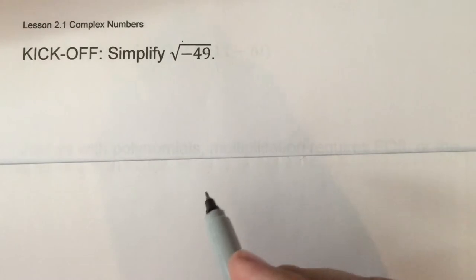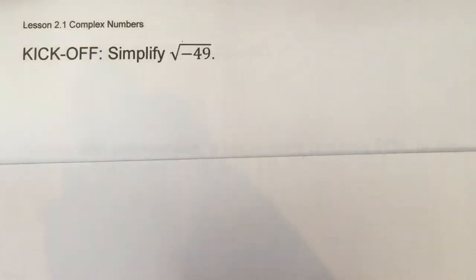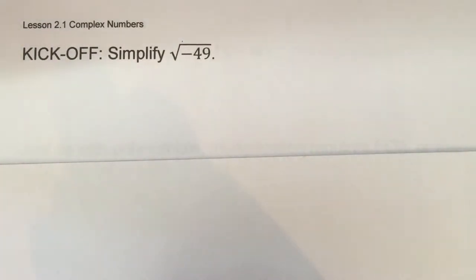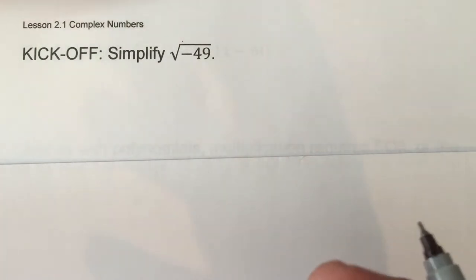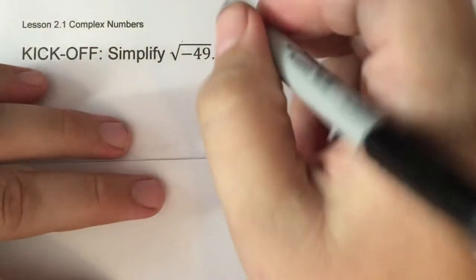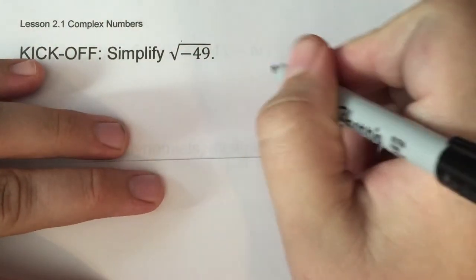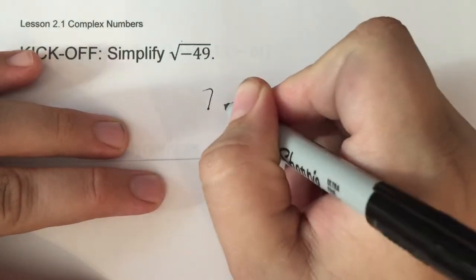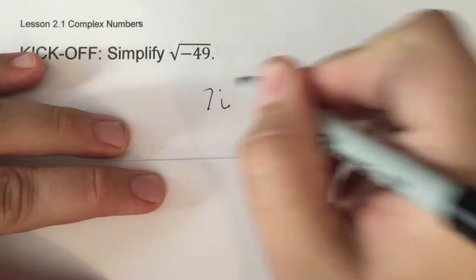So square root of negative 49 — you're told you cannot take the square root of a negative, it doesn't come out well. Well, the loophole is that it just doesn't come out to be a real number; it comes out to be a complex or an imaginary number. So the square root of negative 49 would be 7i.